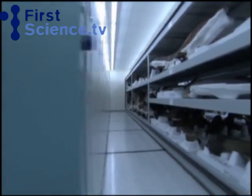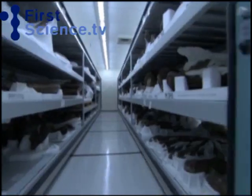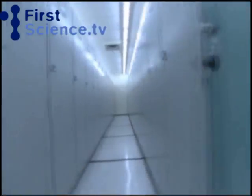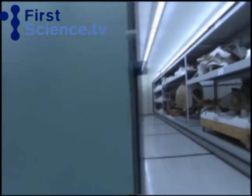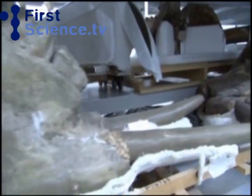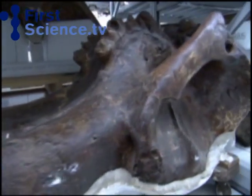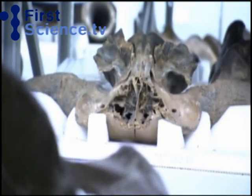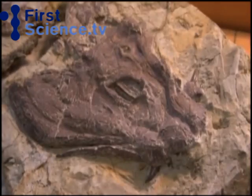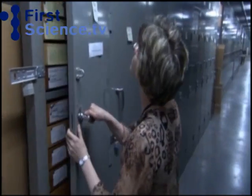Museums around the world contain millions of fossils that reveal what life was like on Earth at different stages in its history. Because each fossil creature can be radioactively dated, we know when and in which order they lived. If Darwin is right, we would expect to find that the earliest fossils are of simple creatures, and that as time passes, fossils get more varied and complex.